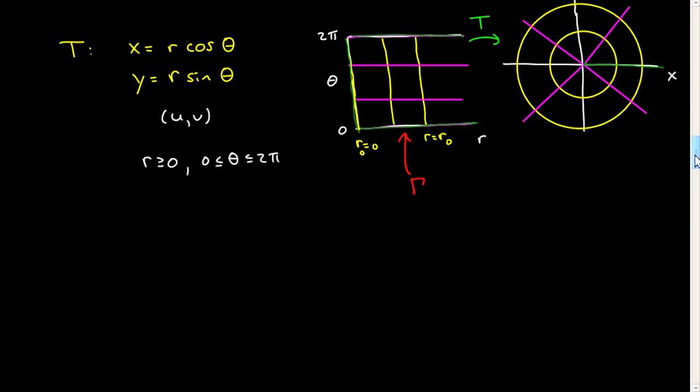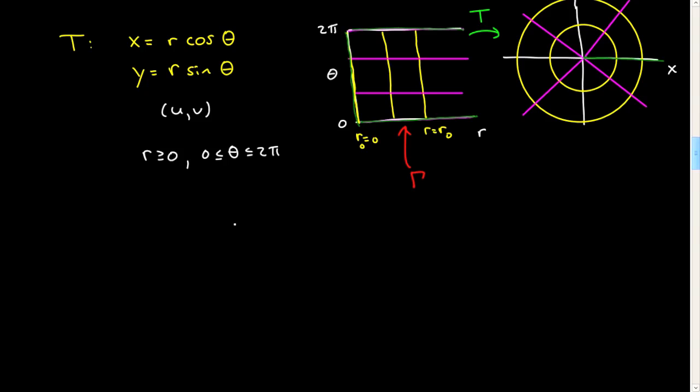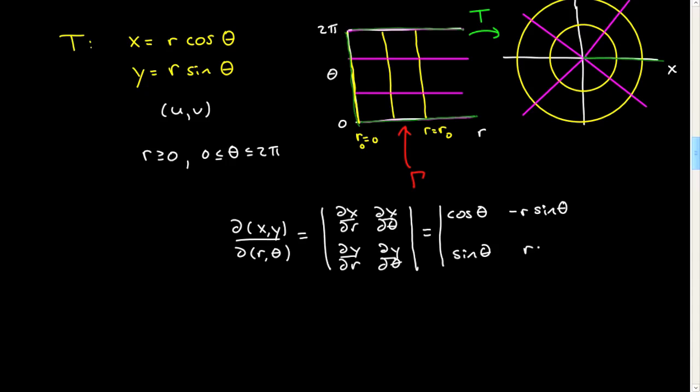The final thing I want to say is something everybody should work out at some point, which is the Jacobian. The Jacobian of x, y with respect to r, theta—I'm going to use the natural coordinates here. That's the determinant. Let me write them all out: ∂x/∂r, ∂x/∂θ, ∂y/∂r, ∂y/∂θ. That determinant is cos θ, -r sin θ, sin θ, r cos θ. That determinant gives me r cos²θ plus r sin²θ equals r.